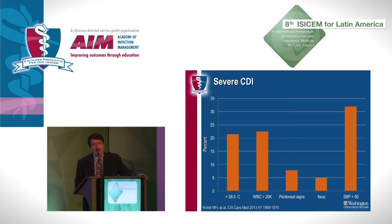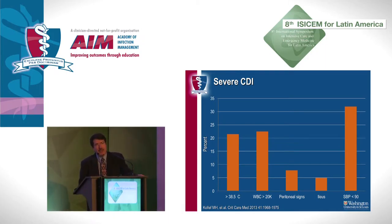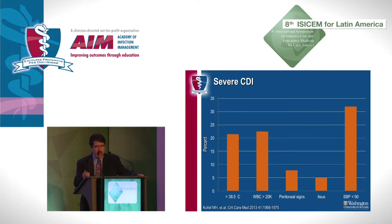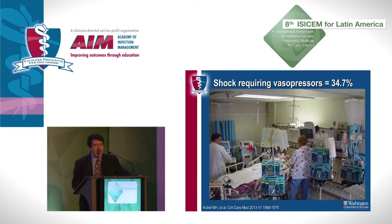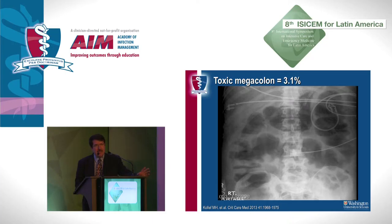We found that a significant number of these patients developed severe C. difficile infection. Defined as elevated temperature greater than 38.5 degrees in roughly 22 percent, white count greater than 20,000 in almost 23 percent, signs of peritonitis in about 7 percent, ileus in about 5 percent, and septic shock — surprisingly — in one-third of patients. About a third of these ICU patients with C. diff during mechanical ventilation required vasopressors and developed a septic shock picture. Early recognition and proper treatment can improve outcome and reduce mortality. Toxic megacolon is important to diagnose, as many patients may require surgery.